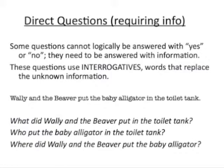Direct questions that need information don't make sense if you answer with yes or no. These questions use interrogatives — words that replace the missing information, sometimes called the journalist question words: who, what, when, where, why, how, how much. These words signal that you need to answer with some kind of information.